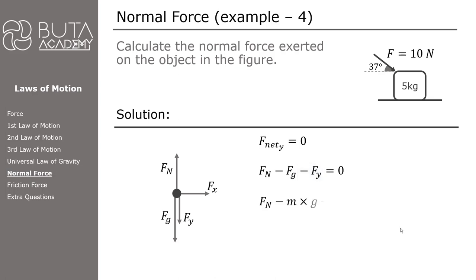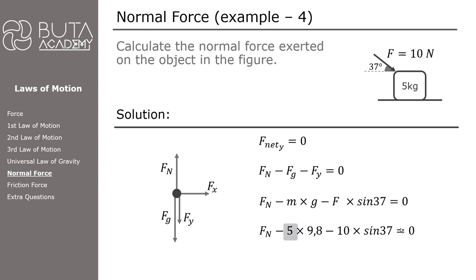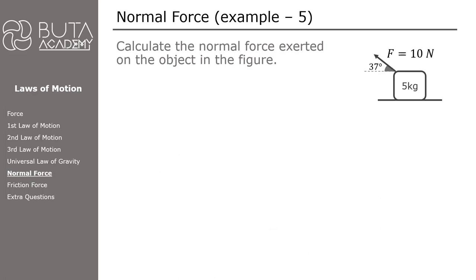The force of gravity can be calculated by multiplying mass and gravitational acceleration. Fy is opposite to 37 degrees, so its value can be calculated by the formula F times sin 37. Mass is 5 kilograms, gravitational acceleration is 9.8, and the applied force is 10 Newtons. The normal force is equal to 55.02 Newtons.